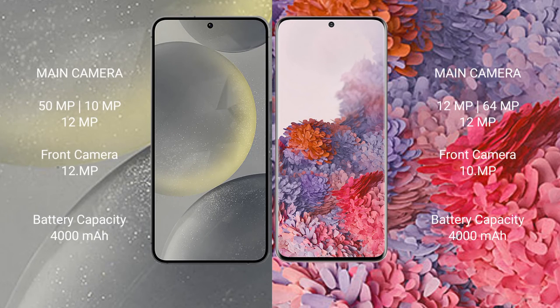Samsung Galaxy S24 has a rear triple camera setup: 50MP plus 10MP plus 12MP, and a 12MP front camera. Samsung Galaxy S20 has a rear triple camera setup: 12MP plus 64MP plus 12MP, and a 10MP front camera.